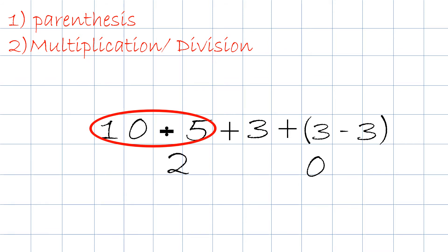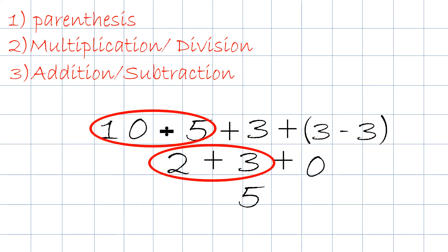Third step is addition and subtraction from left to right. So, let's rewrite the sentence 2 plus 3 plus 0. We'll go with 2 plus 3. The answer will be 5. Bring down the plus. Bring down the 0. 5 plus 0 equals 5.